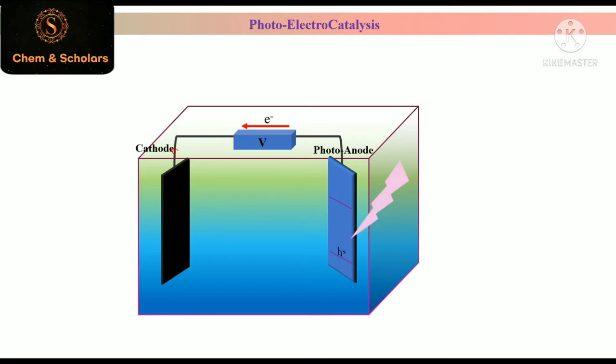Where these electrons participate in several reduction reactions like oxygen reduction reaction or hydrogen evolution reaction. Simultaneously, the holes that are present in the valence band of anode can participate in several kinds of oxidation reactions like oxygen evolution from water splitting and hydroxyl radical generation.